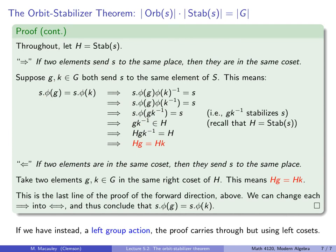Lastly, if we have a left group action instead of a right group action, the proof carries through exactly as above, just using left cosets instead of right cosets. Most results and proofs for left actions have analogous results for right actions. In the next lecture, we will see a variety of examples of group actions involving groups, subgroups, and cosets — how a group can act on itself, on its cosets, and on its subgroups, for example by conjugation, left multiplication, or right multiplication. By doing this, we will get some very slick proofs of some very deep results in group theory.